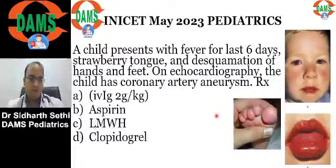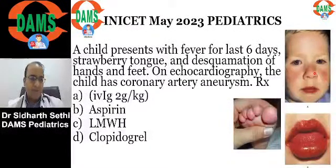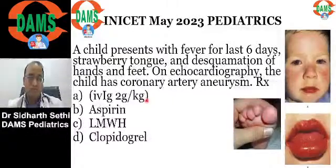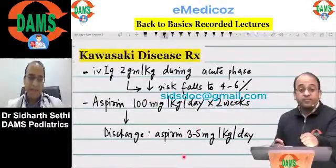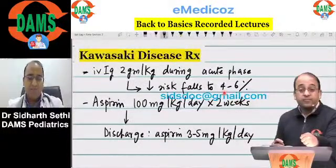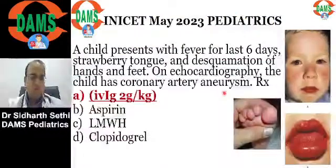There was a typical question on Kawasaki disease. Many students said there were pictures in this question — conjunctival inflammation, strawberry tongue, and skin changes were shown. IVIG reduces the risk of coronary artery aneurysms to four to six percent. IVIG must be given during the acute phase of Kawasaki disease along with high-dose aspirin. The answer is IVIG.